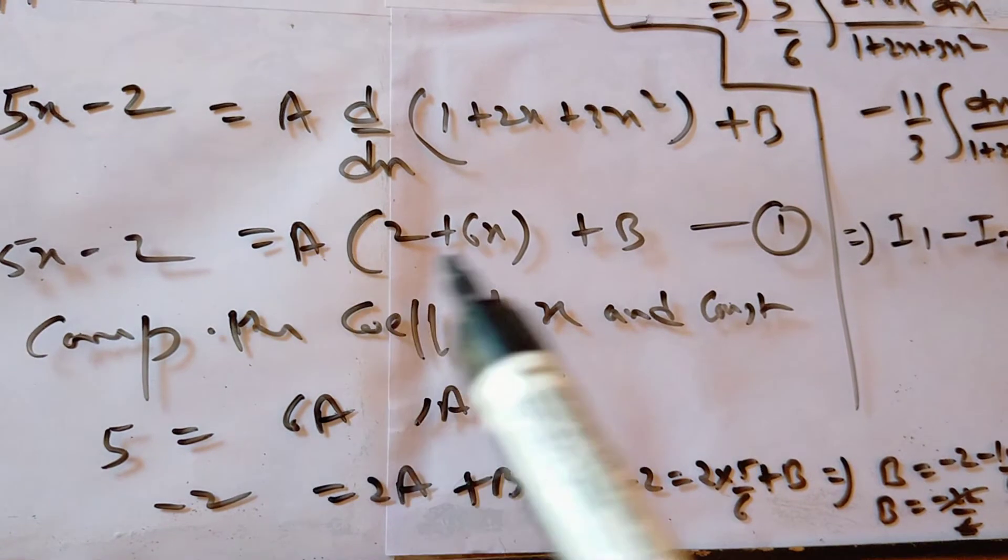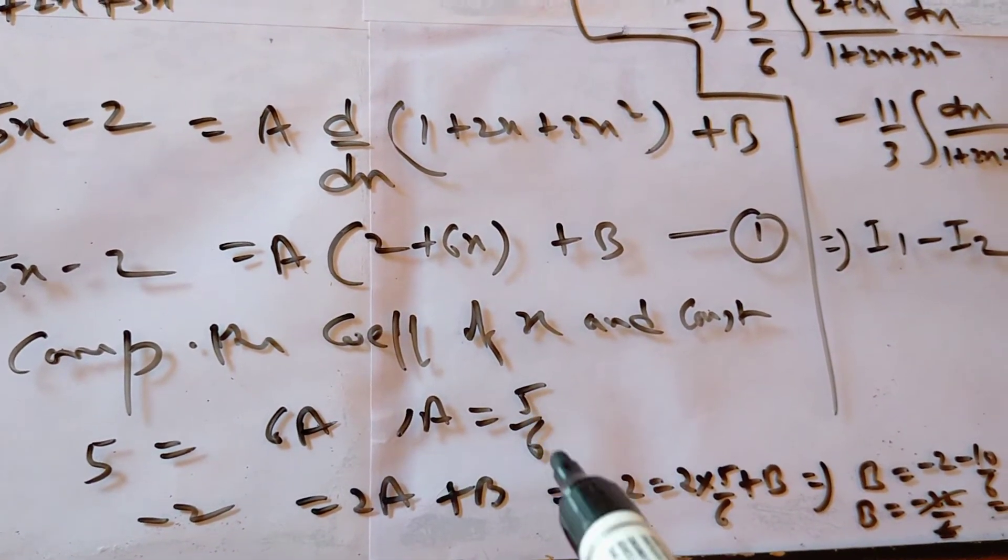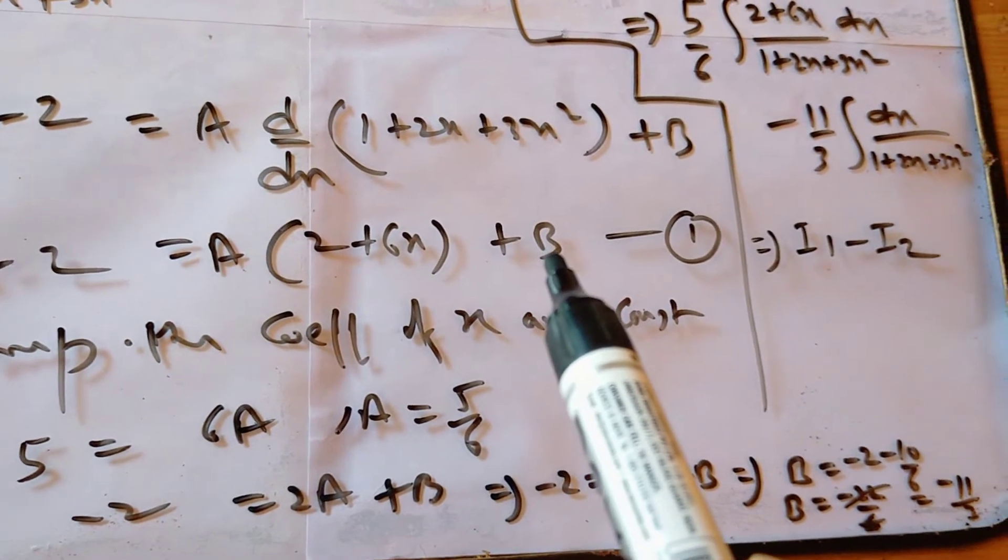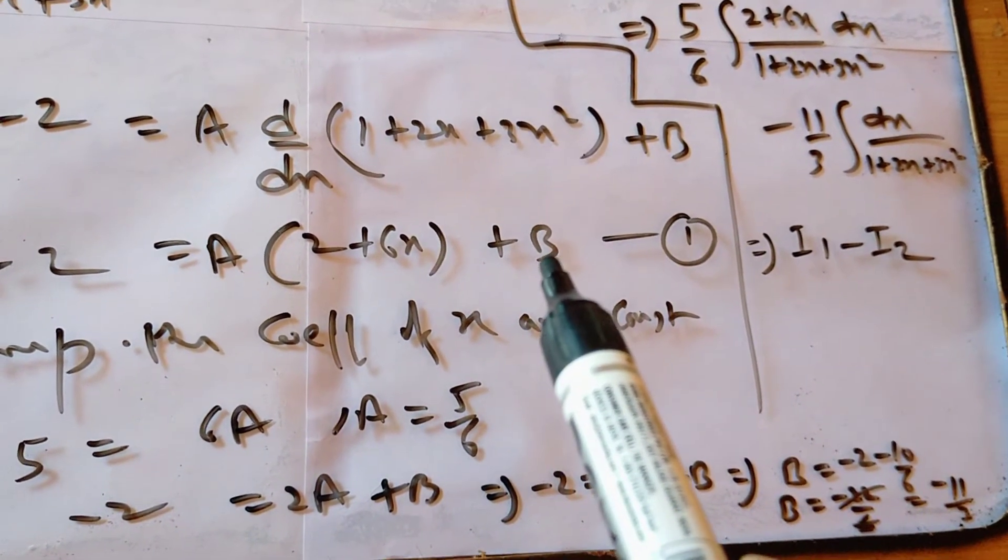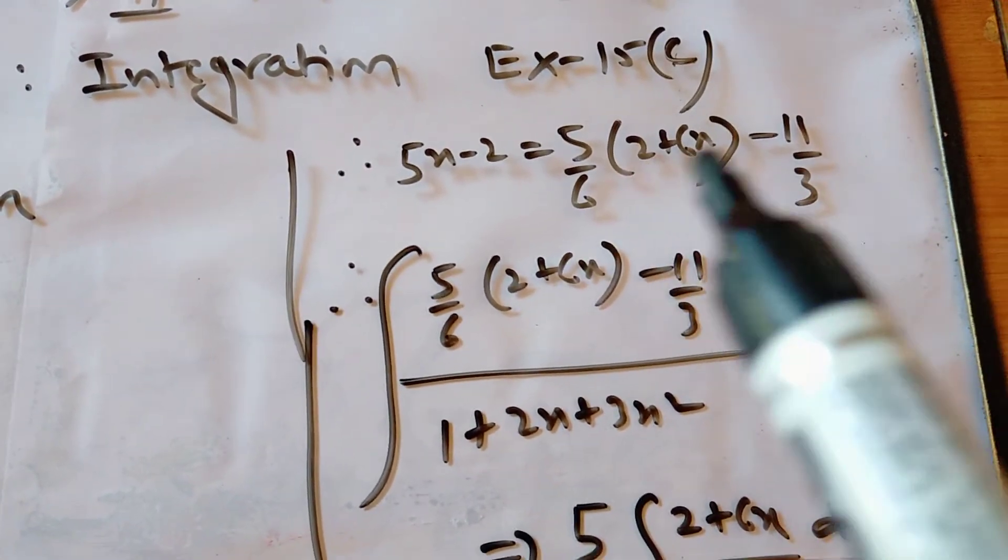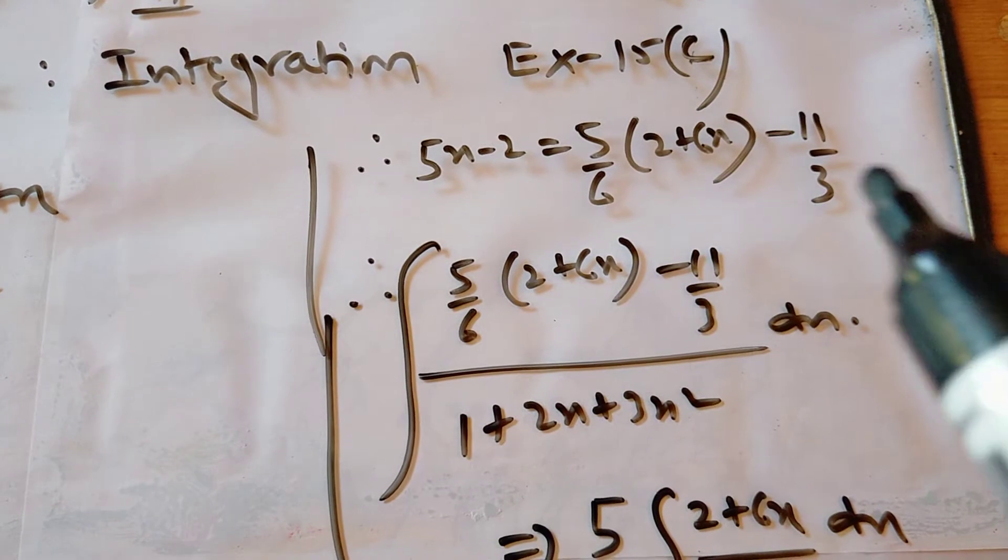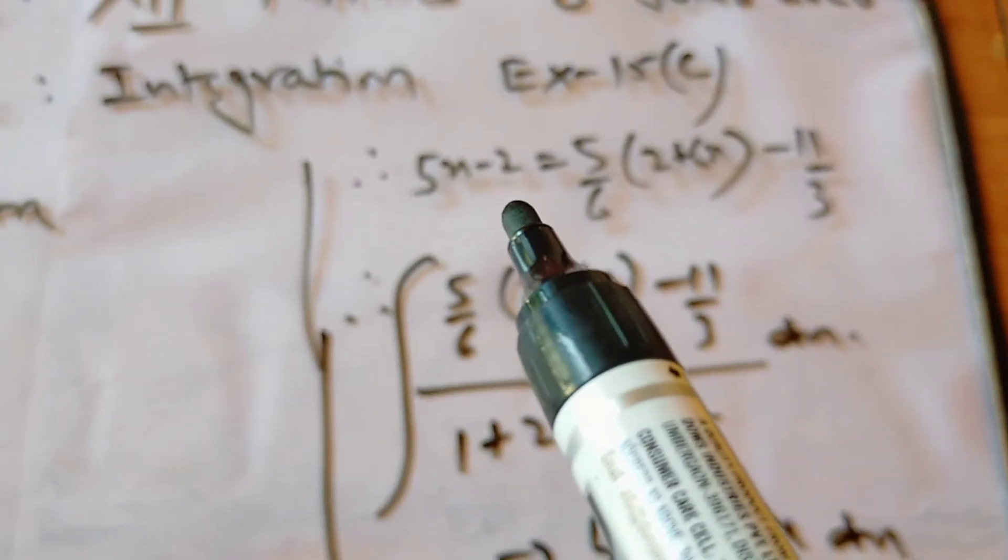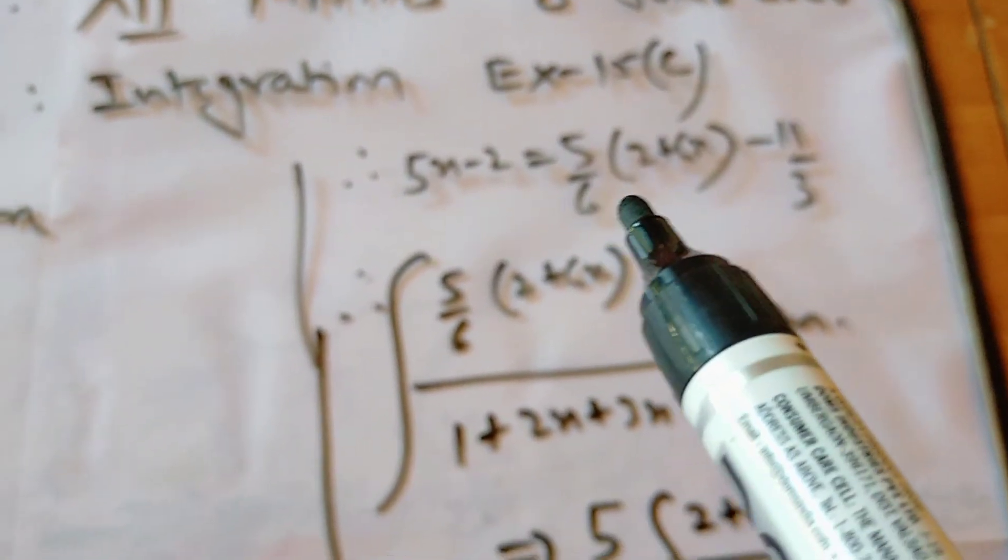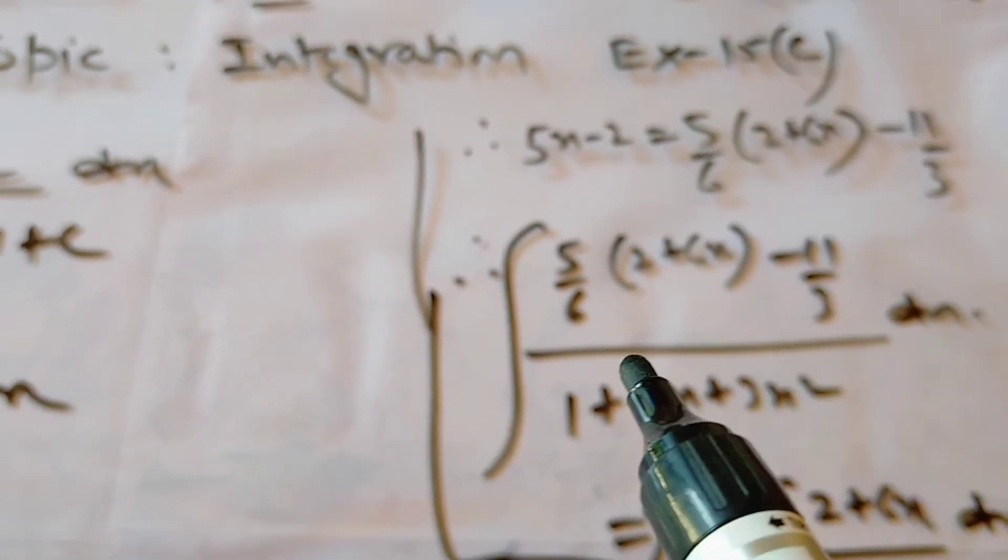In place of A we are writing 5 by 6, and in place of B we are writing minus 11 upon 3. We have written this here. Now, what does this mean? It means that in our question, which is the numerator, it is 5x minus 2. Now it will be 5 by 6 into 2 plus 6x minus 11 upon 3. So we have inserted this in our question. We will substitute it.